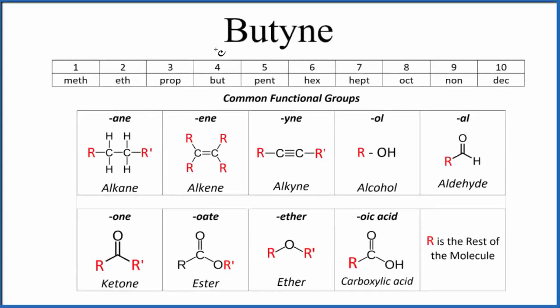Let's write the structural formula for butyne. The chemical formula for butyne is C4H6, but it really doesn't tell us much about how the atoms are arranged. So for that we need the structural formula.